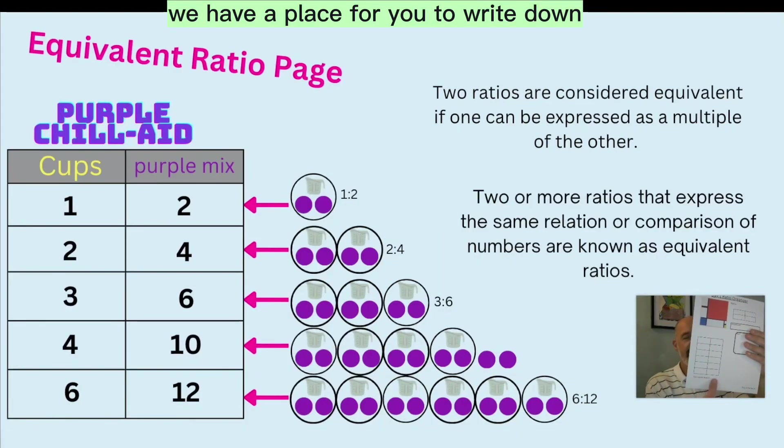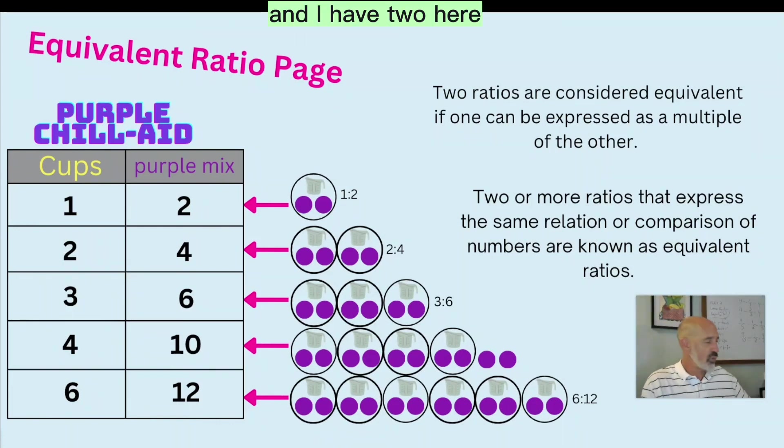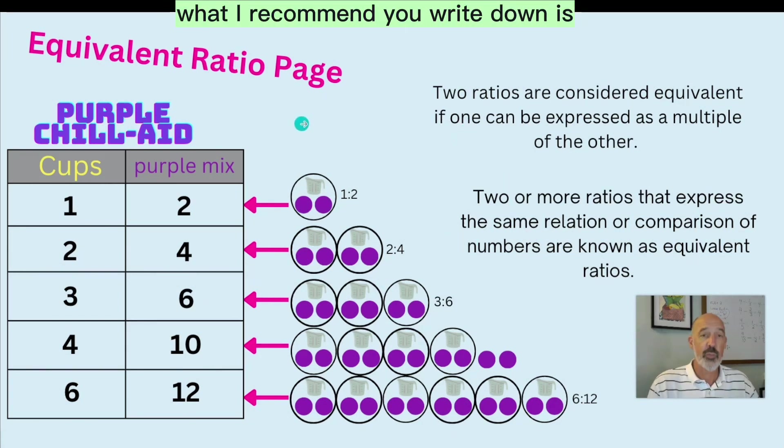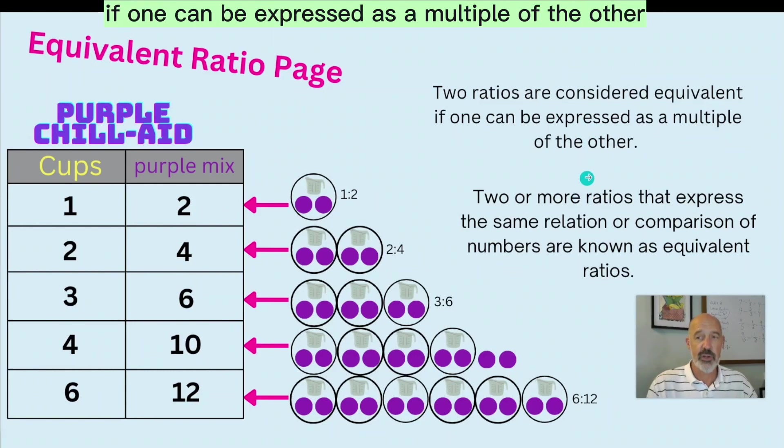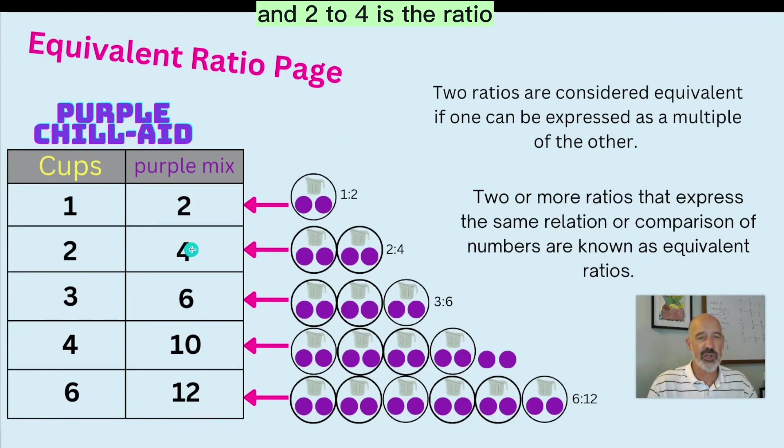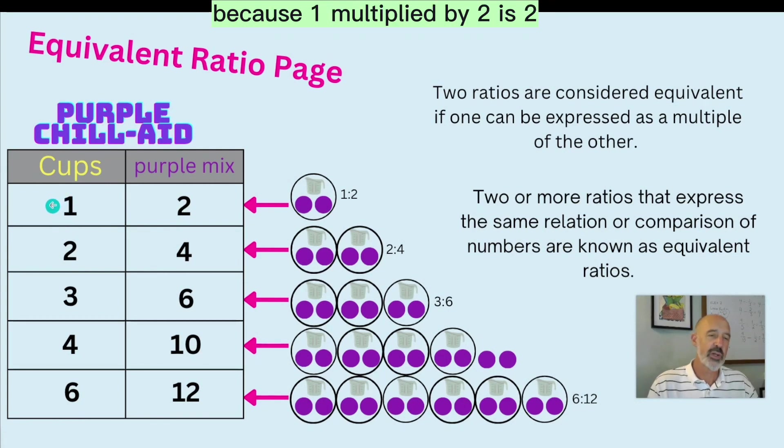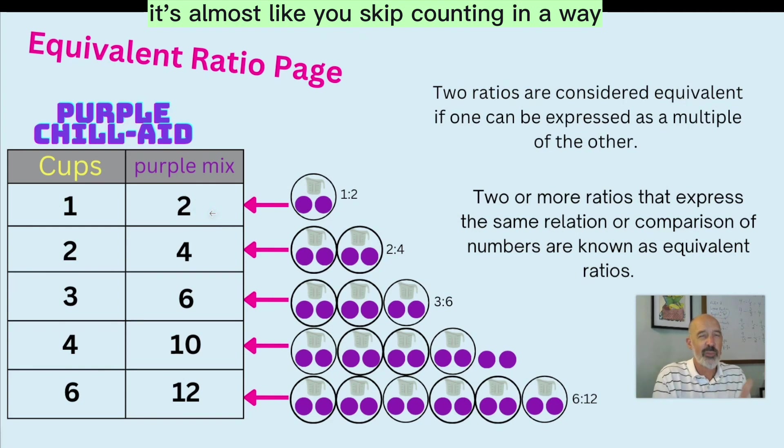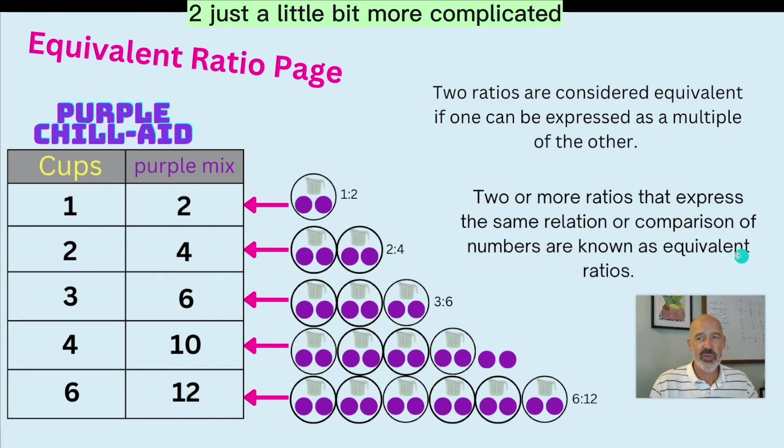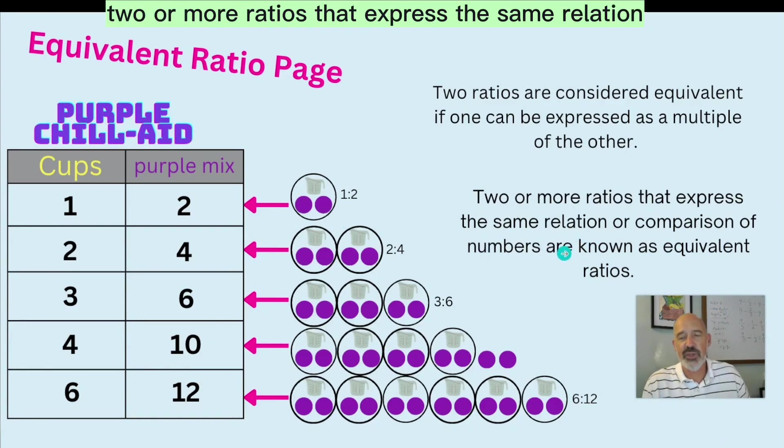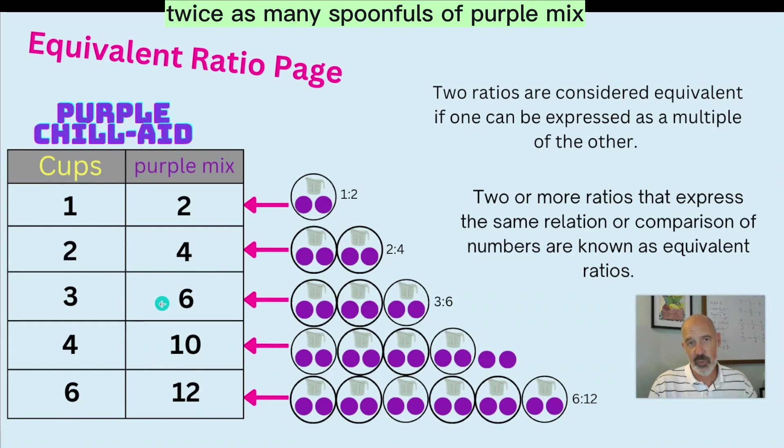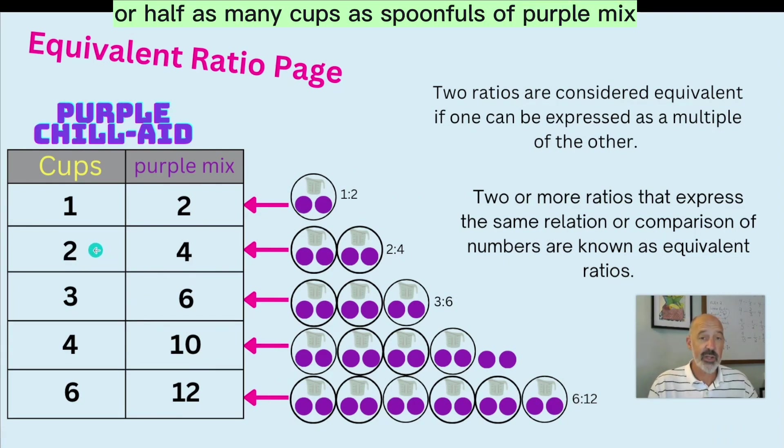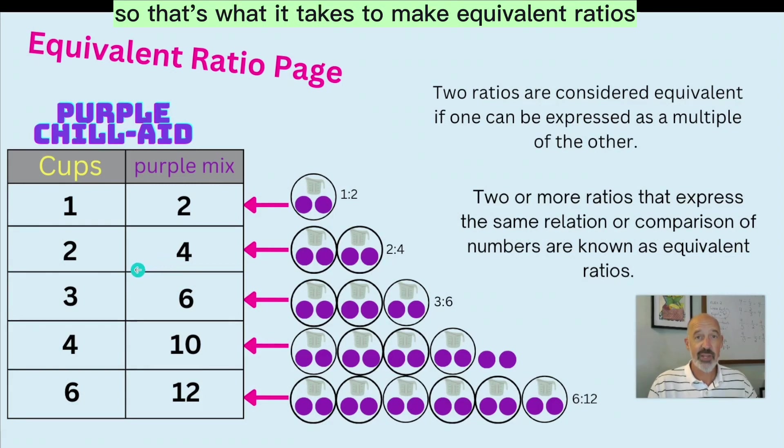So down here at the bottom, we have a place for you to write down the definition of equivalent ratios. And I have two here. One is more, a little bit more confusing than the other. What I recommend you write down is two ratios are considered equivalent if one can be expressed as a multiple of the other. So if one to two is the ratio and two to four is the ratio, I can see that they're equivalent because one multiplied by two is two and two multiplied by two is four. So this idea of multiple means that as it grows, it's almost like you're skip counting in a way. And that's kind of what this says too, just a little bit more complicated. Two or more ratios that express the same relation or comparison of numbers. And in this case, that relation is the times two, twice as many spoonfuls of purple mix as cups of water or half as many cups as spoonfuls of purple mix. So that's what it takes to make equivalent ratios.